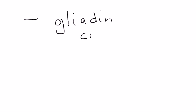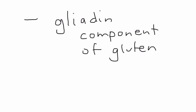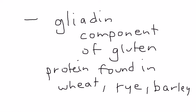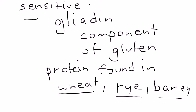Celiac disease is actually a hereditary immune response to gliadin — the gliadin component of gluten. This is a protein found in wheat and other similar types of food like rye and barley. People who have celiac disease are sensitive to this protein, and when they eat anything containing wheat, rye, or barley, their body's sensitivity causes a very significant reaction.